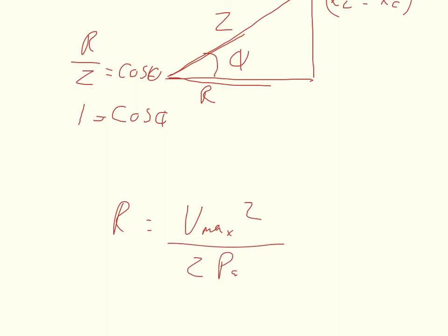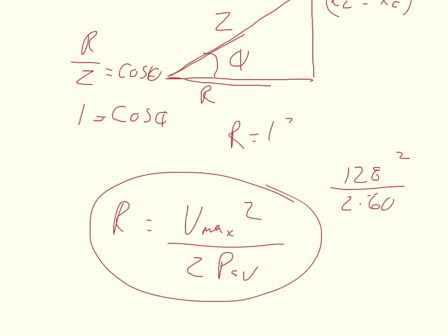We're left with the resistance equals V max squared divided by two times the average power. This is going to be the same equation for part a and part b. In my case, I had 128 for my voltage. I'm going to square that and divide it by two times 60. In part a, my answer is R equals 136.533 ohms. In part b, my V max stayed the same, but the average power changed from 60 to 150, so two times 150, and my resistance was equal to 54.6133.